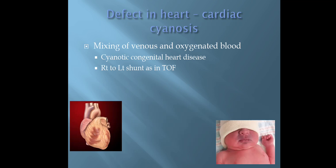The first is defect in heart, called cardiac cyanosis. It is due to the mixing of venous and oxygenated blood. For example, in case of cyanotic congenital heart disease with right to left shunt, as in Tetralogy of Fallot (TOF).